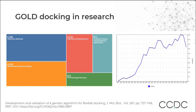This slide explains that GOLD has been used in medicinal chemistry research, then biochemistry and molecular biology research where you can look into mechanism of action for a particular interaction of ligand and receptor. It has also been used in pharmacology and pharmacy where you can see the effect of the binding of a ligand into a receptor. GOLD has been increasingly used and it is evident from the publications and citations mentioned since 1997.